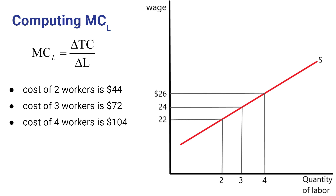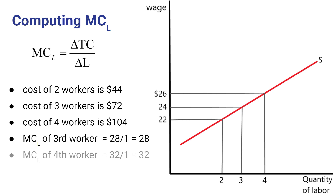We can use this information to find the marginal cost of the third and fourth workers. When labor use went from 2 to 3, the cost of labor increased from $44 to $72. Therefore, the change in total cost is 28 divided by the change in labor of 1, so the marginal cost of labor is $28. Similarly, when the fourth worker is hired, labor costs increase from $72 to $104, so the marginal cost of that fourth worker is 32 divided by 1, or $32.